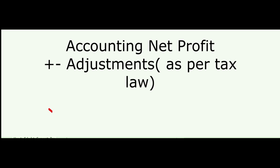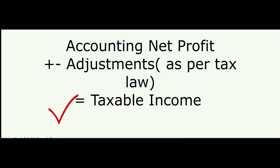So what is taxable income? Taxable income means your accounting profit plus adjustments. Once you have that figure, you will get your taxable income, and on that taxable income you will be charged corporate tax.